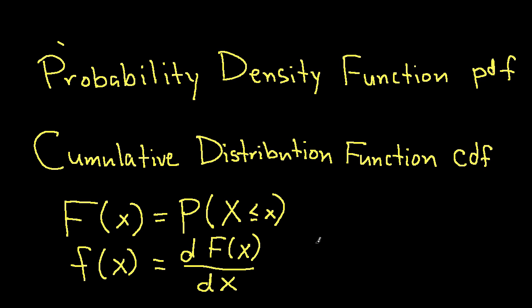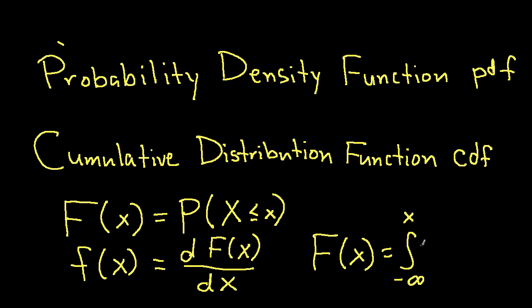Using the fundamental theorem of calculus, we can say that the cumulative distribution function F of x is the integral from minus infinity to x of f of z dz, where f is the probability density function and z is a dummy variable of integration.